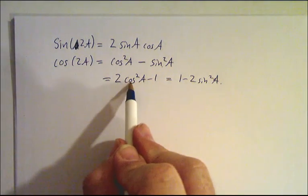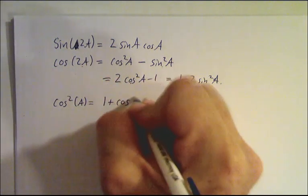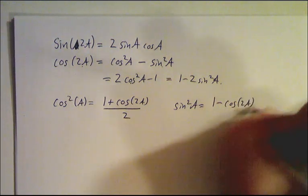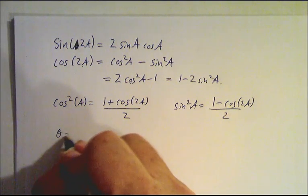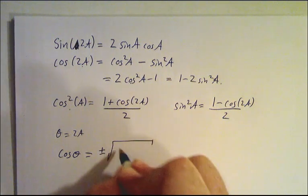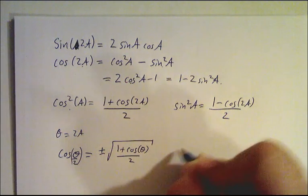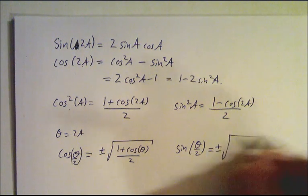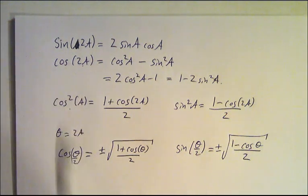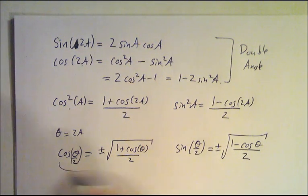That means you can relate cosine squared of an angle to the cosine of twice that angle. So cos²(a) = (1 + cos(2a)) / 2, and sin²(a) = (1 - cos(2a)) / 2. Letting θ = 2a, that tells us cos(θ/2) = ±√((1 + cos θ)/2) and sin(θ/2) = ±√((1 - cos θ)/2). So from the addition of angle formulas you get the double angle formulas, and from those you get the half angle formulas.